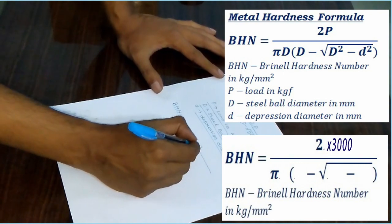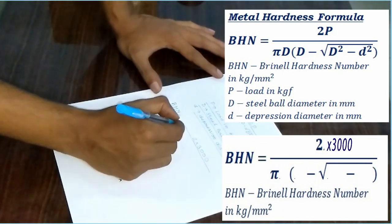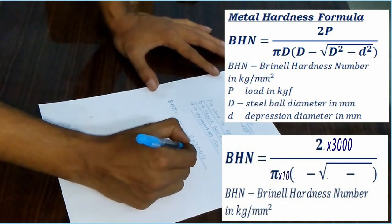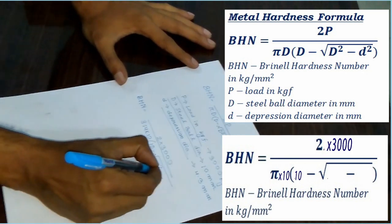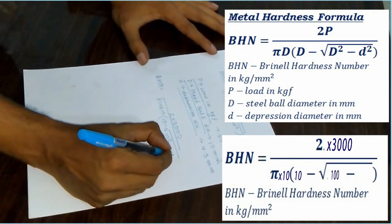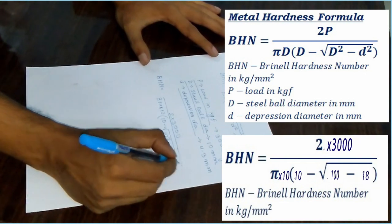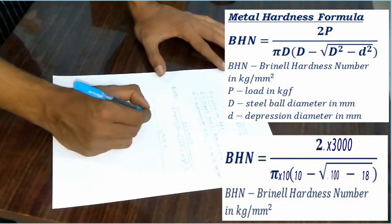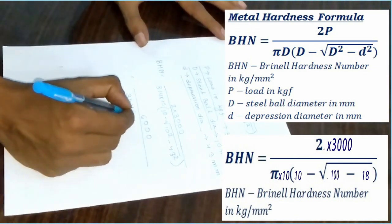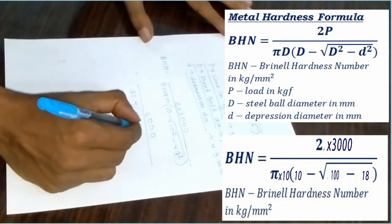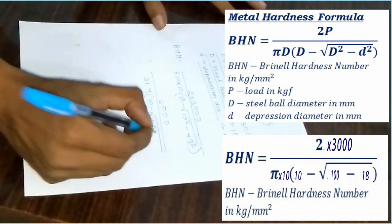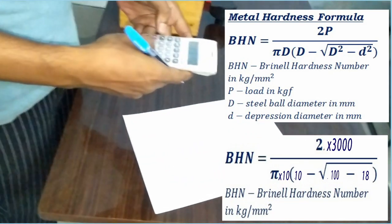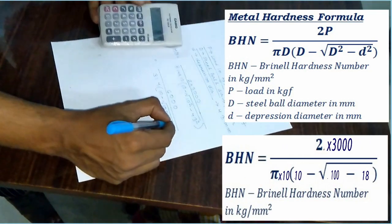It is 2 into 3000, 3.14 into 10, 10 minus 10 square minus 4.3 square. What we are getting is 6031.4. 10 minus 100 minus 4.3 square, that is 18.49.